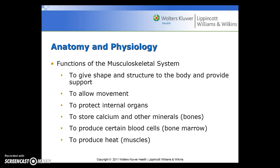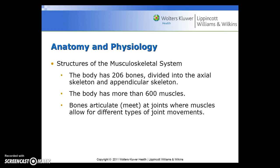When we talk about the anatomy and physiology of the musculoskeletal system, its functions are to give shape and structure to the body and provide support to allow movement, protection of internal organs, storage of calcium and other minerals in the bones, production of certain blood cells from the bone marrow, and the production of heat from muscles. The body has 206 bones divided into the axial skeleton and appendicular skeleton. There are more than 600 muscles, and bones articulate or meet at joints, where muscles allow for different types of joint movements.